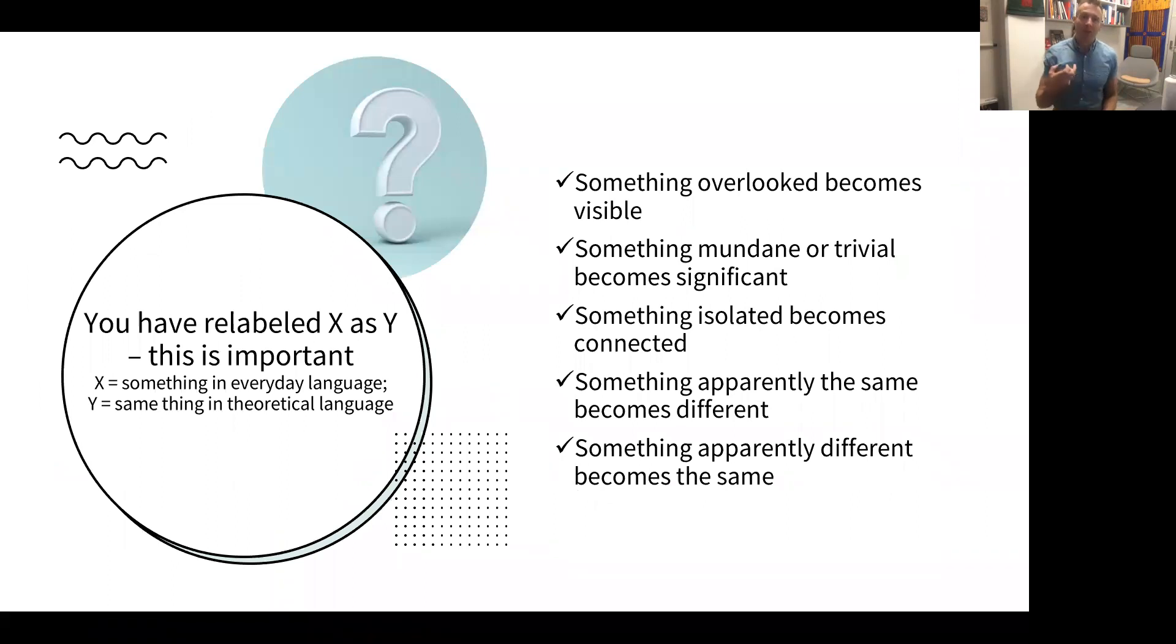So what you have done by matching examples is relabeling X, something in everyday language, like a child did this or played in some way, as Y, something in theoretical language. So you've relabeled something. So you might say, by saying this theory has a concept of mediation, which is a concept from activity theory, or there might be microaggressions, for example, in some understandings of organizations or mimesis and all sorts of concepts like that.